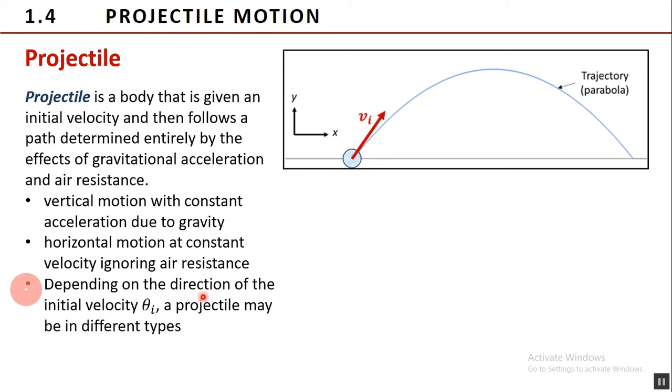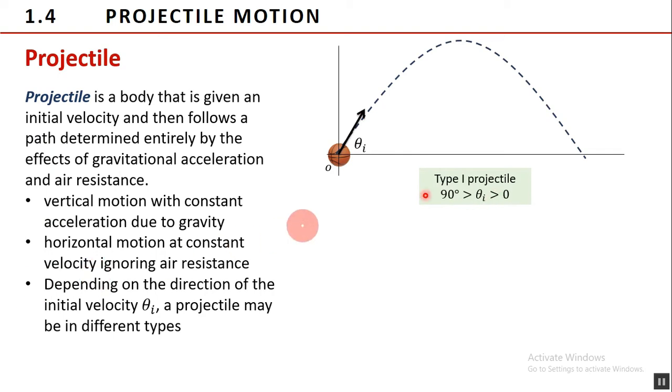Depending on the direction of the initial velocity θ sub i, a projectile comes into two types. Type 1 projectile has an initial angle within the range of 0 to 90 degrees, or simply an acute angle. While a Type 2 projectile is launched horizontally, that is at 0 degree.